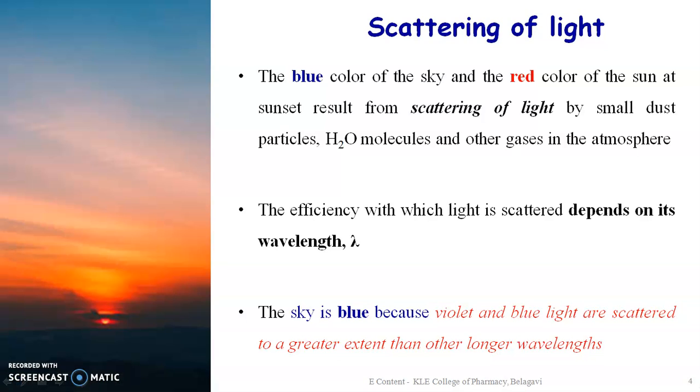A very good example of scattering of light is the sunset wherein we can see the blue sky and different shades of yellow, orange and red for the color of the sun. This is the scattering of sunlight by various dust particles that are present in the atmosphere, water molecules and different other gases.